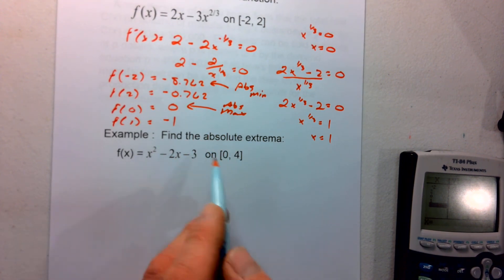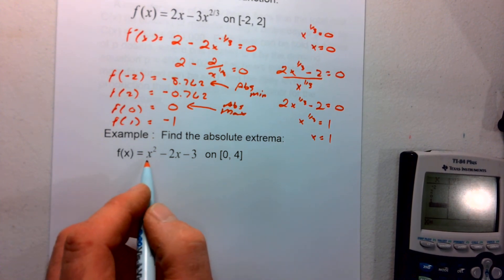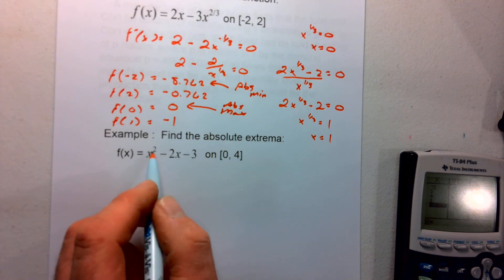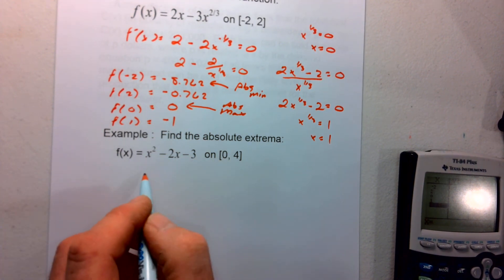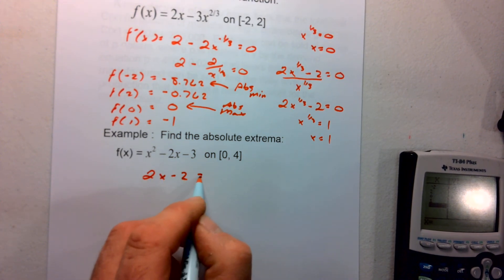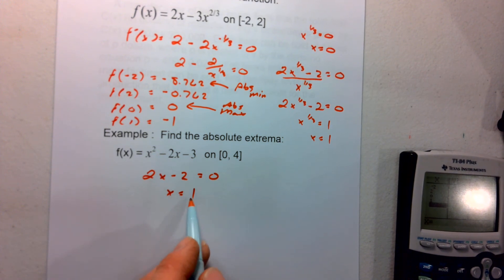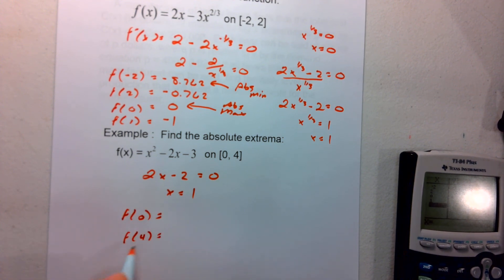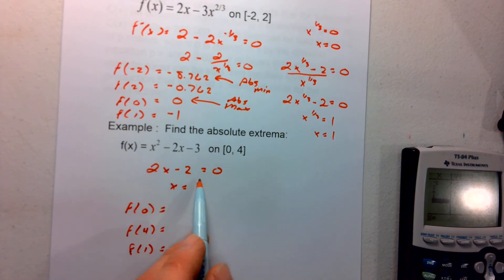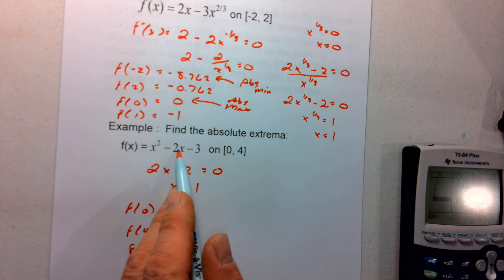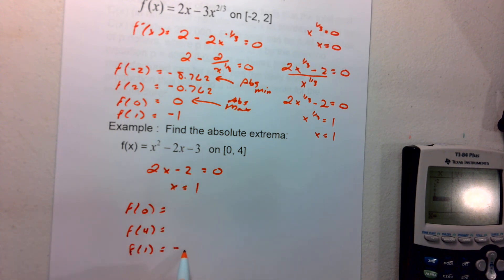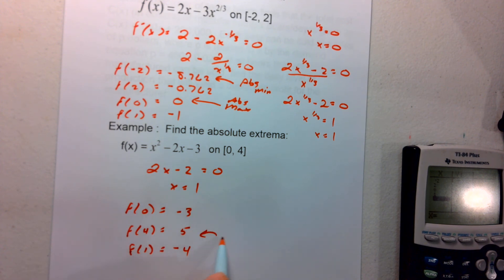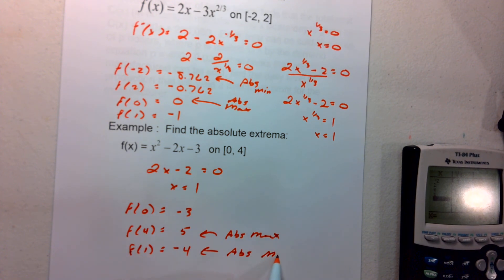Last but not least, here we have x² minus 2x minus 3 on the interval from 0 to 4. Finding the derivative and setting it equal to zero gives x equals 1. I check that 1 is on that interval — it is. So I find f(0), f(4), and f(1). Plugging in 1: 1 minus 2 minus 3 gives negative 4. Plugging in 4: 16 minus 8 minus 3 gives 5. And 0 gives negative 3. So the absolute maximum is at (4, 5) and the absolute minimum is at (1, negative 4).